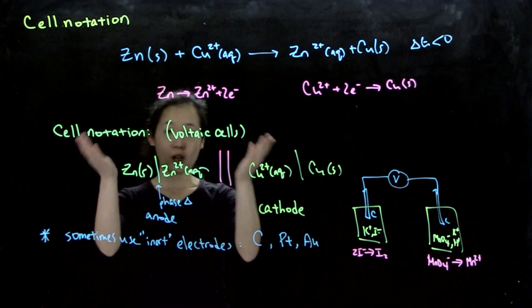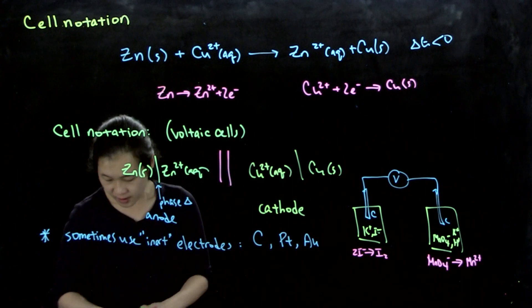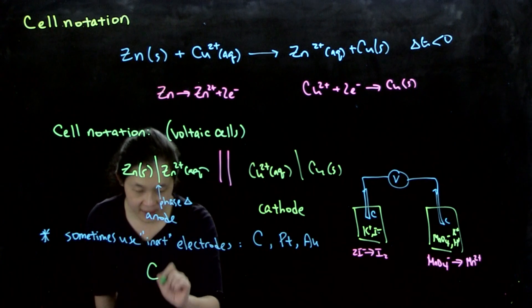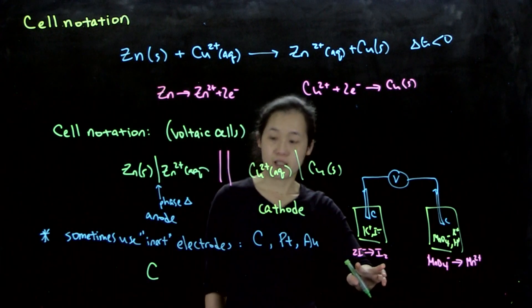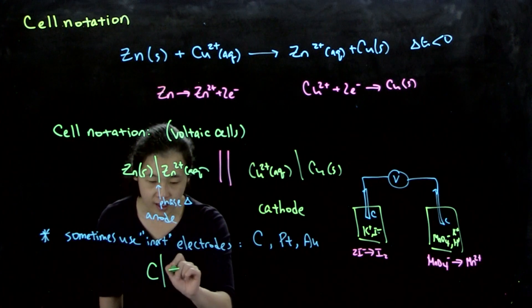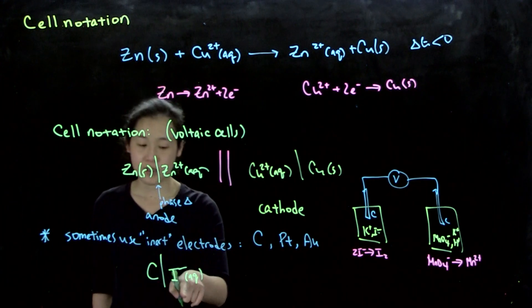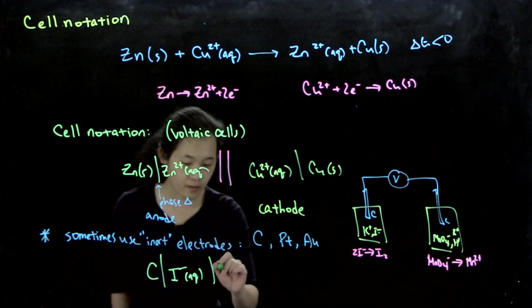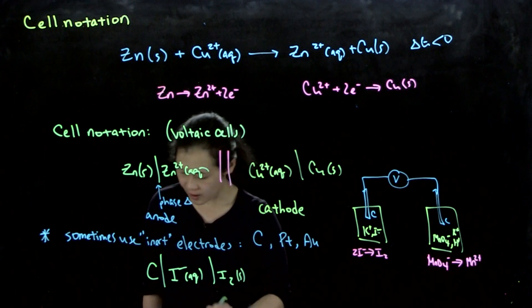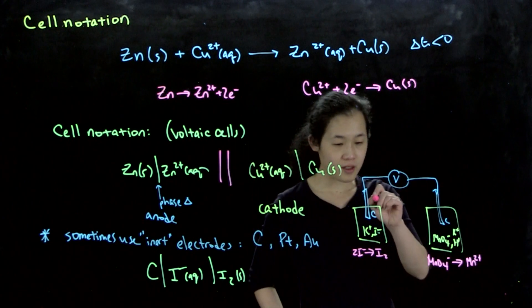To express this particular cell in cell notation, we do include the inert electrode even though it's not participating. We have carbon (solid) as our electrode. Our anodic reaction is I- going to I2. So we write I- (aqueous), with a phase change between carbon and the aqueous solution. Then we draw the oxidized product, I2, which is a phase change because I2 is now also solid. We need a salt bridge, otherwise this won't work.